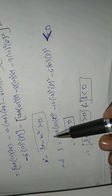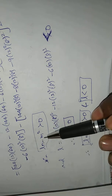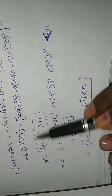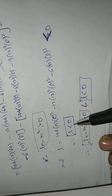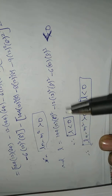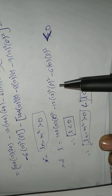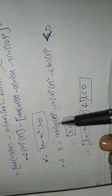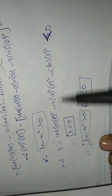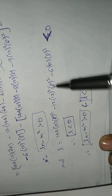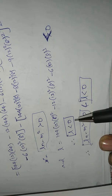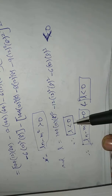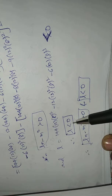We also verify that L is less than zero at this point. Since LN minus M squared is greater than zero and L is less than zero, both conditions for a maximum are satisfied. Therefore, f(x, y) achieves a maximum at x equals 12 and y equals 8.